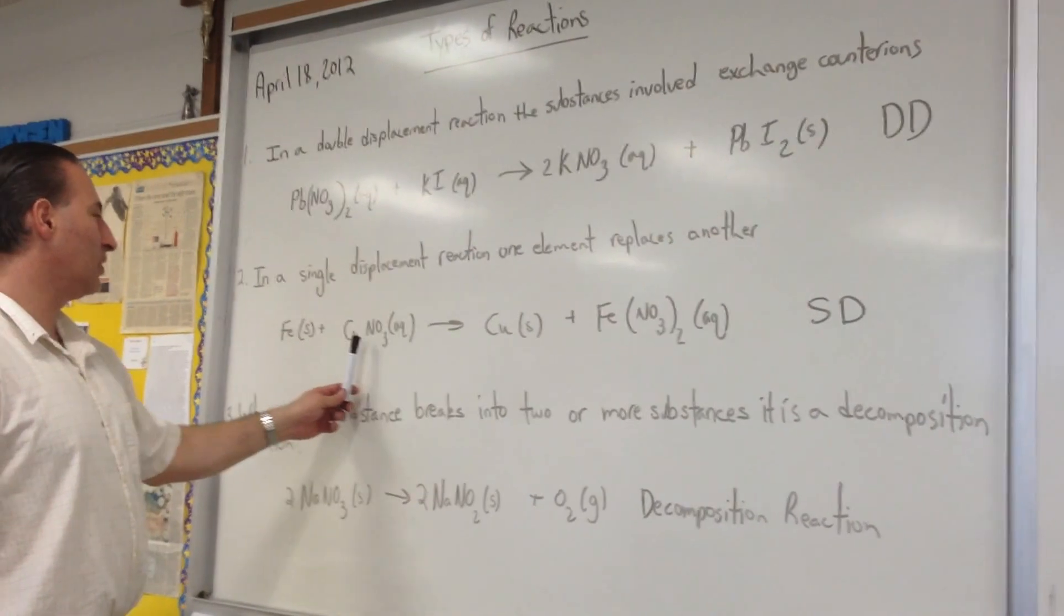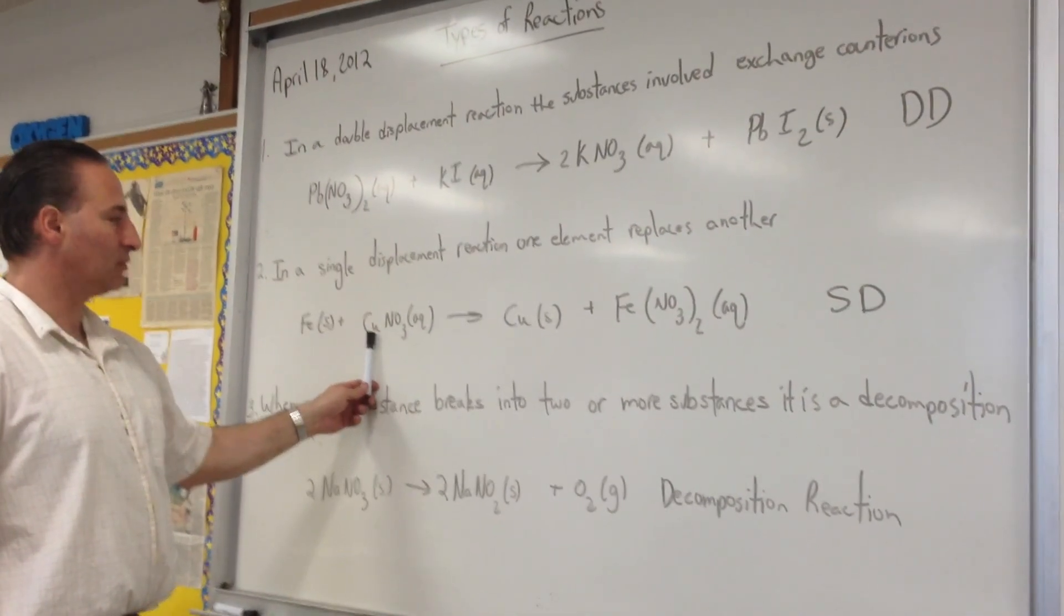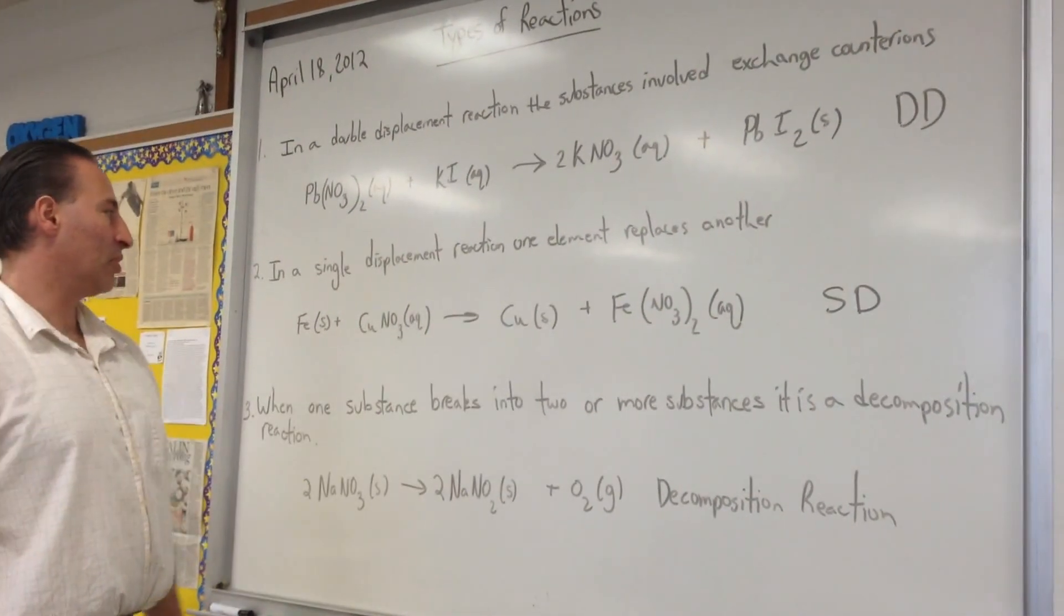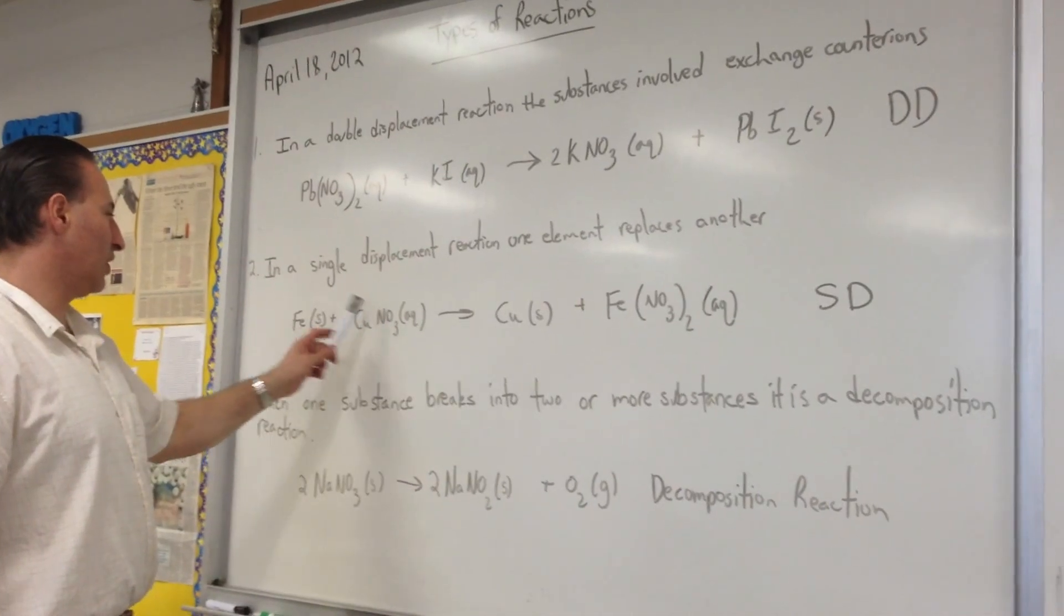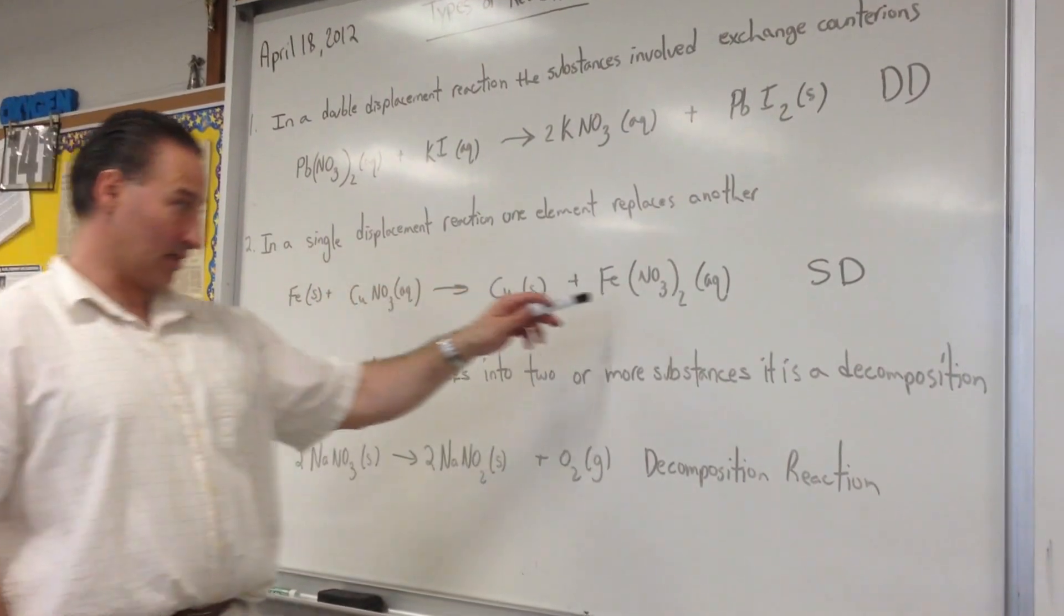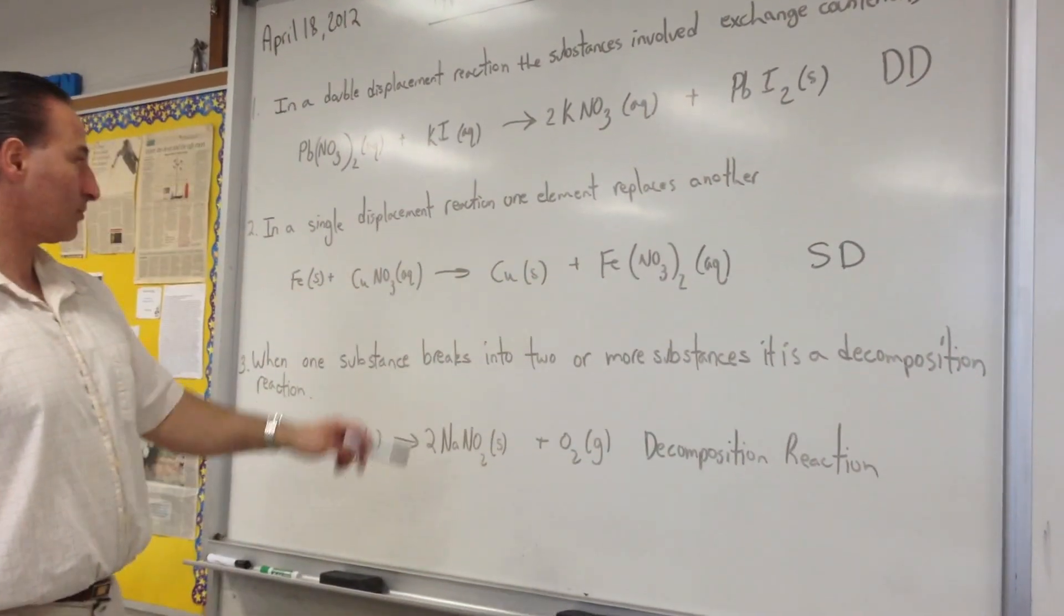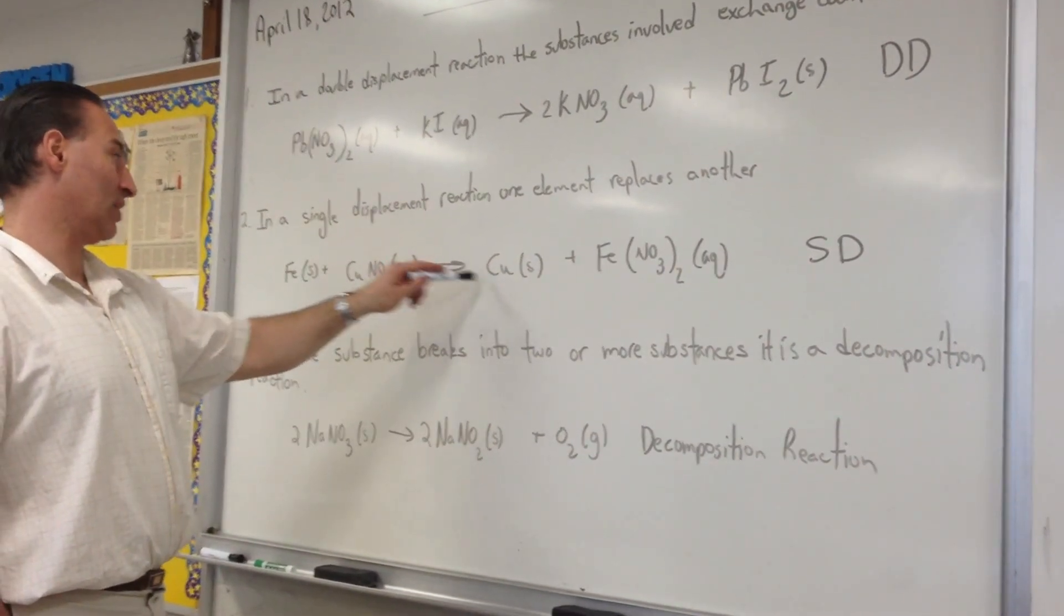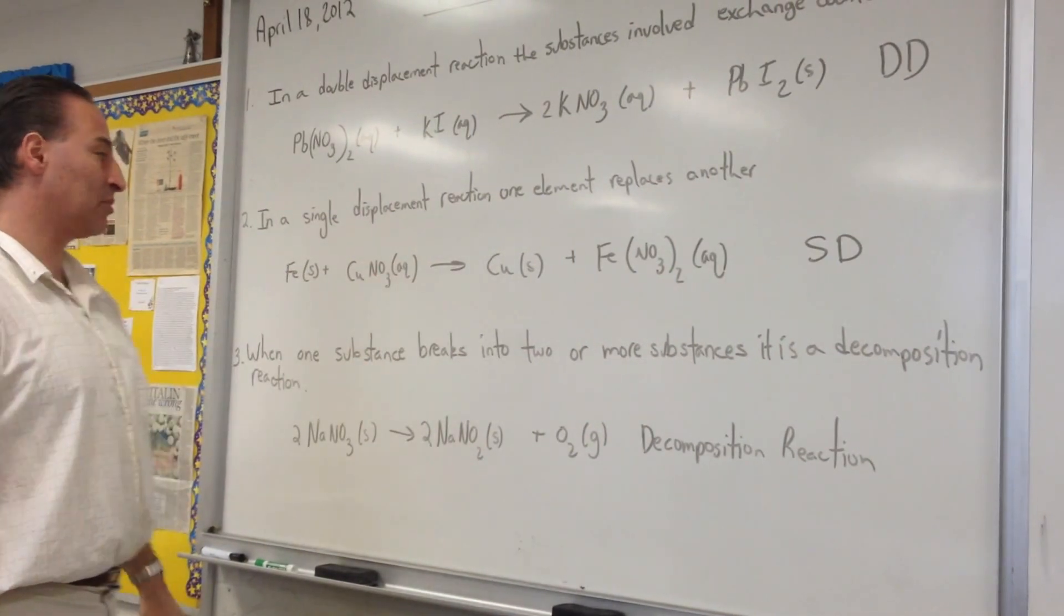Here we see that solid iron replaces copper in copper nitrate. So what happens is the iron becomes oxidized, it loses electrons, and then combines, it takes on nitrate as its counter-ion.